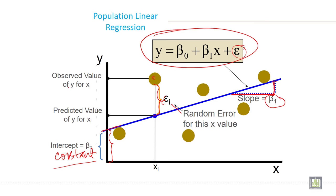This is the observed value of y for x here and the predicted value of y for x. The gap between predicted value and observed value is called the random error of the x value.